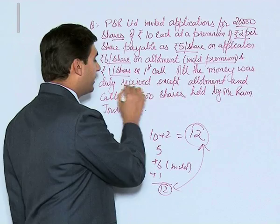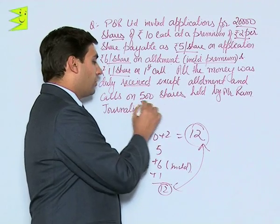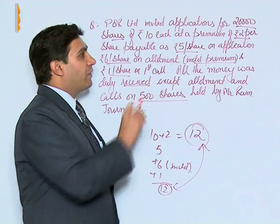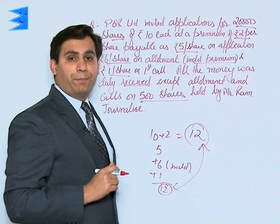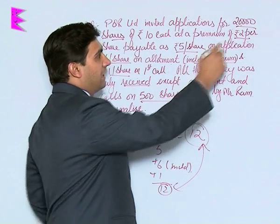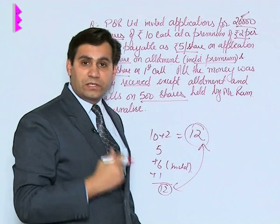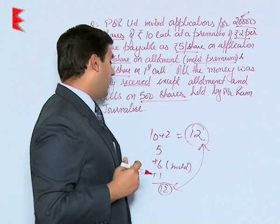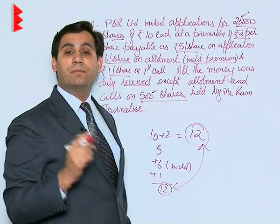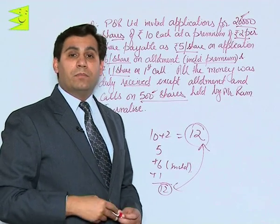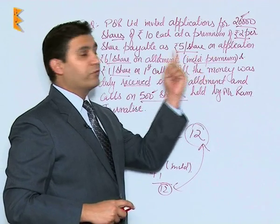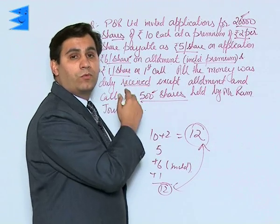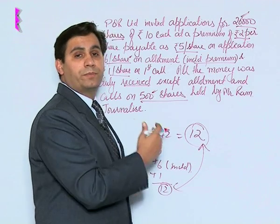Moving ahead, all the money was duly received except allotment and calls on 500 shares held by Mr. Ram. The first point to note is that the number of applications is not given, so we assume applications were equal to shares offered — this is a case of full subscription. The second point is that all money has been received except from Mr. Ram, who paid application money of Rs.5 but has not paid Rs.6 per share on allotment or Rs.1 per share on call.